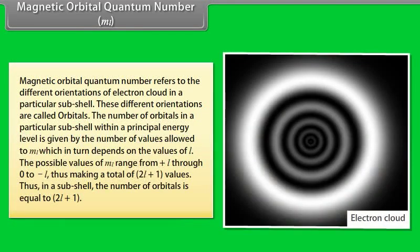Magnetic Orbital Quantum Number: The magnetic orbital quantum number refers to the different orientations of electron cloud in a particular subshell. These different orientations are called orbitals. The number of orbitals in a particular subshell is given by the number of values allowed to ML, which depends on the value of L. The possible values of ML range from +L through 0 to −L, making a total of 2L+1 values. Thus, in a subshell, the number of orbitals equals 2L+1.